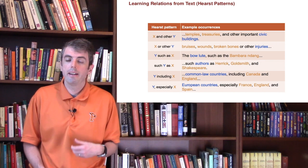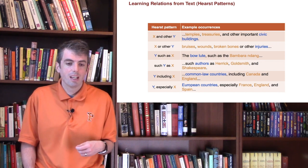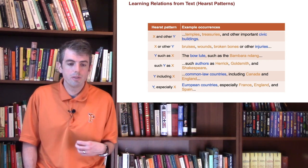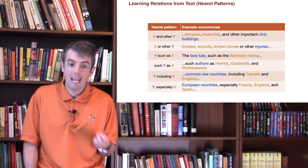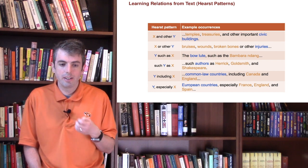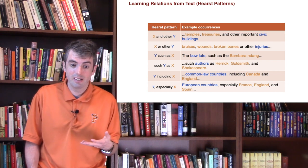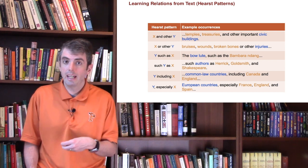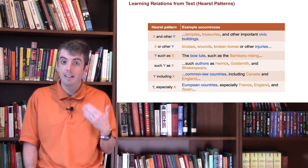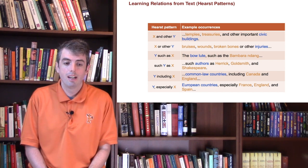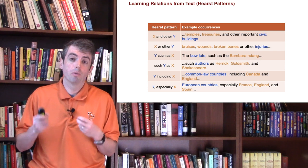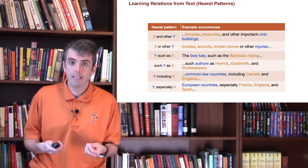One way of doing that is something called Hearst patterns. So if you see the piece of text 'temples, treasuries, and other important civic buildings,' you know that temples and treasuries are both examples of civic buildings. Or 'common law countries, including Canada and England' — if you see that text, where you have Y including X, you know that Canada and England are examples of common law countries. You can get a lot of examples like this, and these are much higher recall than what people laboriously type into knowledge resources like Wikipedia or Freebase.